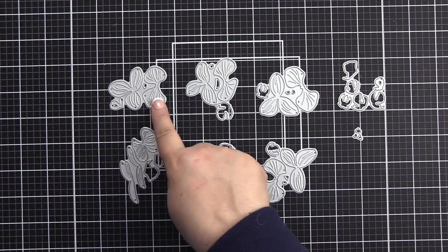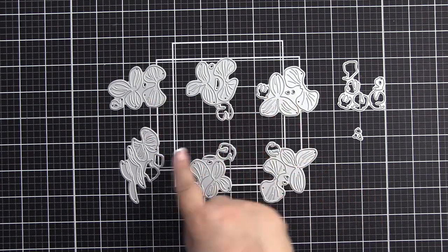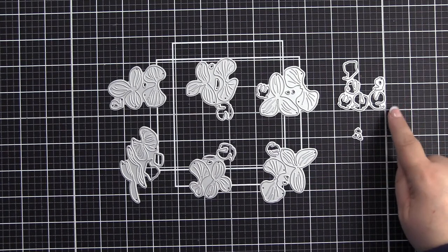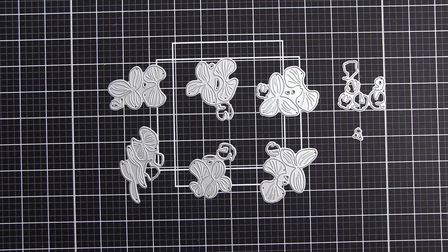Here are the six dies laid out to create each of the orchids in order. On the right hand side you'll see two dies that create just the flower centers.